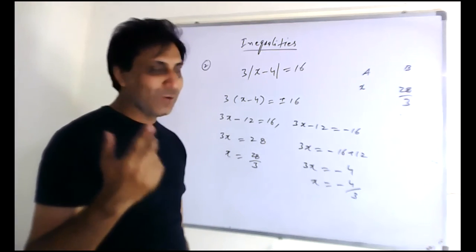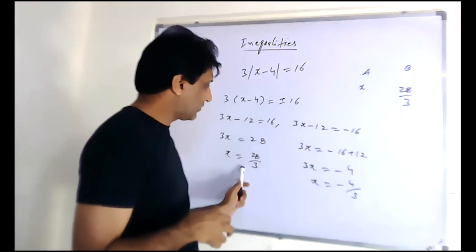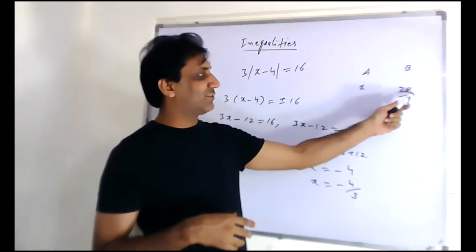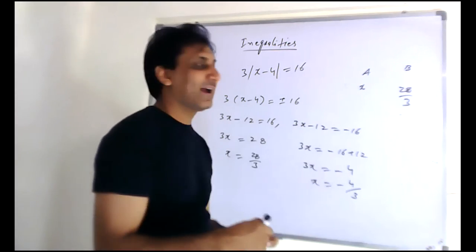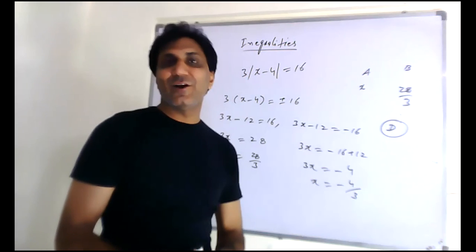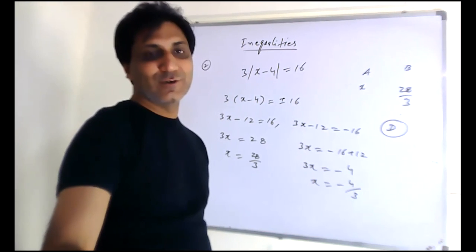We have got two values. When x equals 28 over 3, that's C - they're equal. But when x is minus 4 over 3, then 28 over 3 is greater. So you have to choose option D - we cannot determine which is greater, less, or equal.